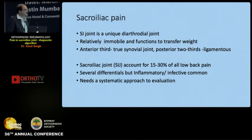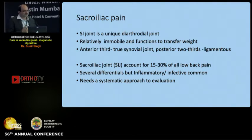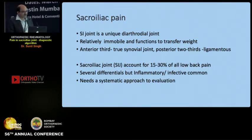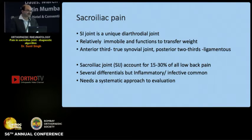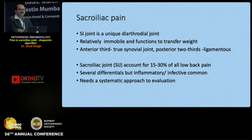The sacroiliac joint is a unique diarthrodial joint in that it is relatively immobile and functions to transfer weight from the axial skeleton to the lower limb. Importantly, the anterior third of the joint is a true synovial joint, whereas the posterior two-thirds are ligamentous. Literature suggests about 15 to 30 percent of low back pain originates from the sacroiliac joint, with inflammatory and infective causes remaining the most common differentials, requiring a systematic approach to reach a proper diagnosis.